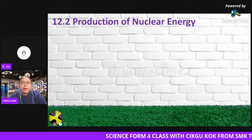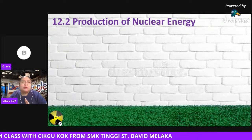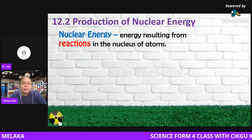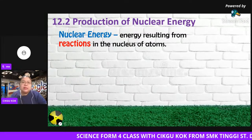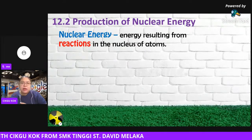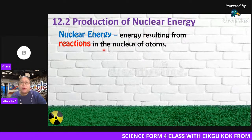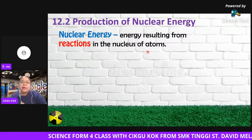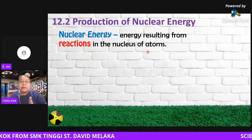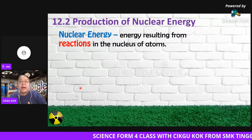Now we look at the production of nuclear energy — how is it produced? Nuclear energy is energy resulting from a reaction in the nucleus of the atom. The process works like this: using the nucleus of an atom, they do a reaction, and finally energy is produced. This energy we call nuclear energy — that is the definition.